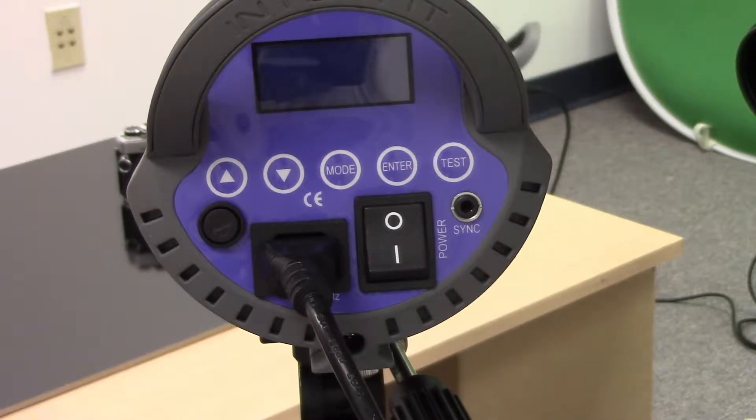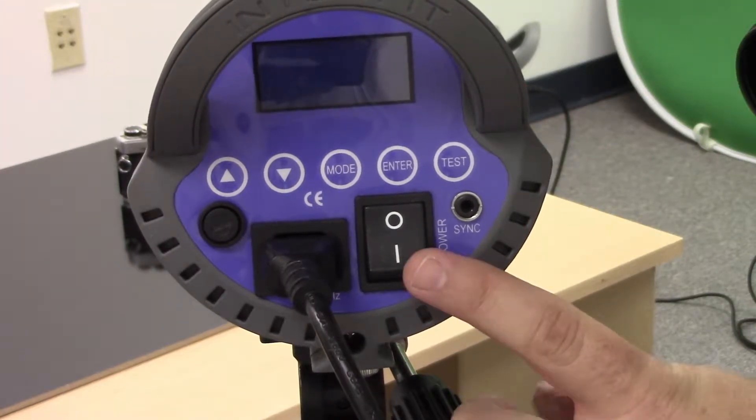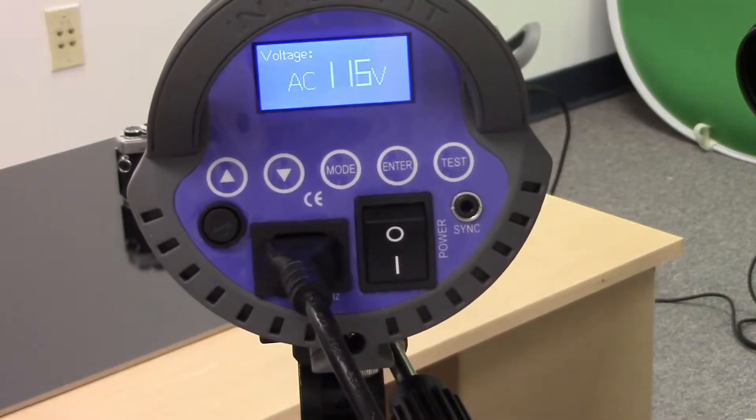How we control this light and all of these monostropes are going to be the same. We have our screen up here. This is going to give our readout of our power, allow us to flip through our different modes. We're going to turn this light on. We're going to wait for it to boot up.